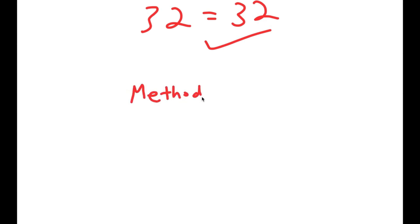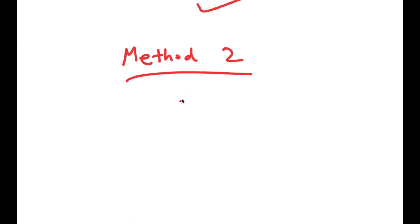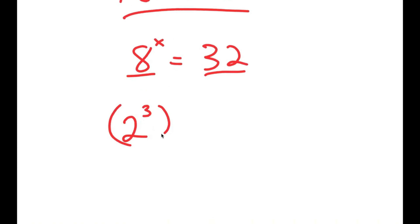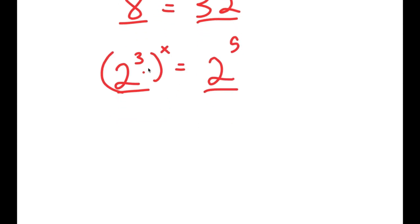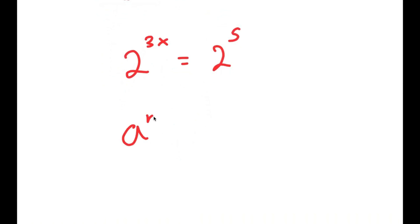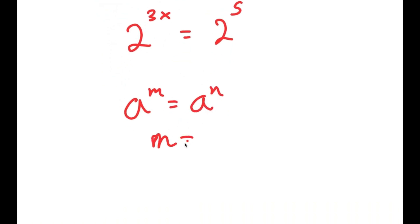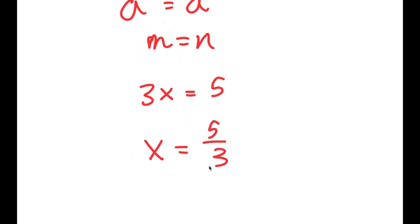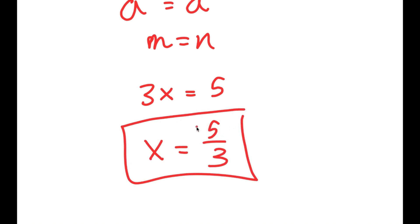I also have a second method of solving this problem. For the second method, I'm simply going to rewrite both numbers with the same base. So 8 becomes 2 to the power of 3, and 32 becomes 2 to the power of 5. So 2 to the power of 3 to the power of x equals 2 to the power of 3x, which equals 2 to the power of 5. Because the bases are the same, 3x equals 5, giving x equals 5 over 3.